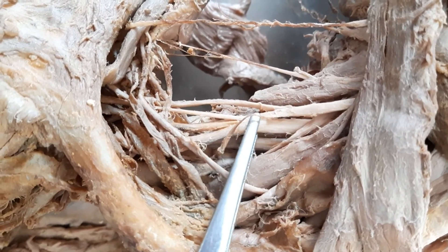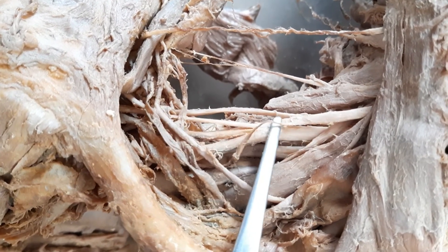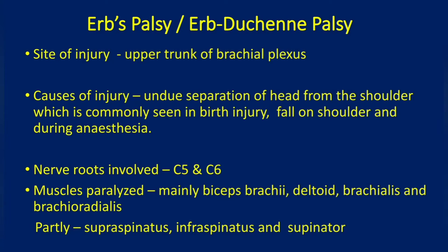Any injury to Erb's point leads to Erb's paralysis, also called Erb's palsy or Erb-Duchenne palsy. The site of injury is the upper trunk of the brachial plexus. Causes include separation of head from the shoulder, commonly seen in birth injury, fall on shoulder, and during anesthesia. The nerve roots involved are C5 and C6.